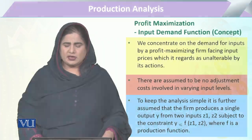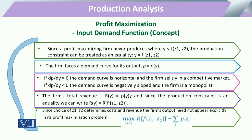Now, if we look at this situation — we have taken an output, and that output is produced through the combination of certain inputs, Z1 and Z2. The output is less than or equal to the available resources, less than the amount of quantity of the products we have taken.